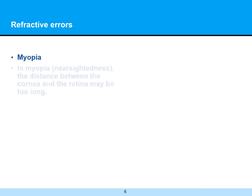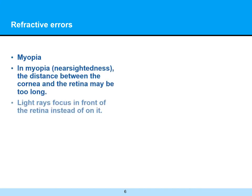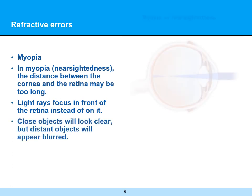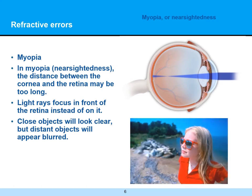The problem comes in myopia, also known as nearsightedness, when the distance between the cornea and the retina may be too long. Light rays focus in front of the retina instead of on it. Close objects will look clear, but distance objects will appear blurred. We can see the simulation where the girl in the foreground is clear, whereas the far images of rocks and trees are blurry. The blue focused light rays are falling short of — in other words, in front of — the retina.